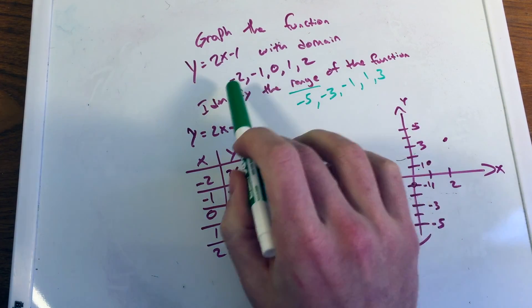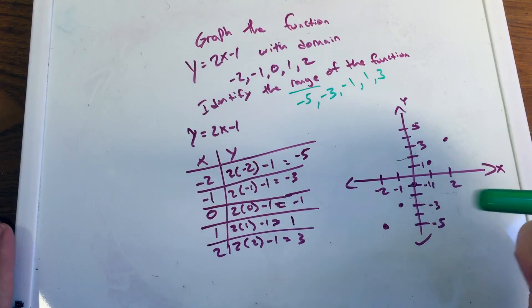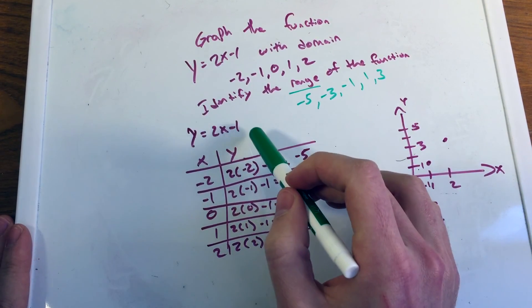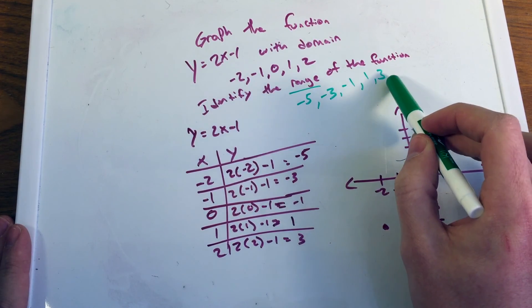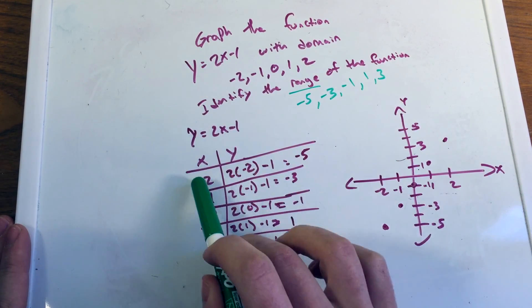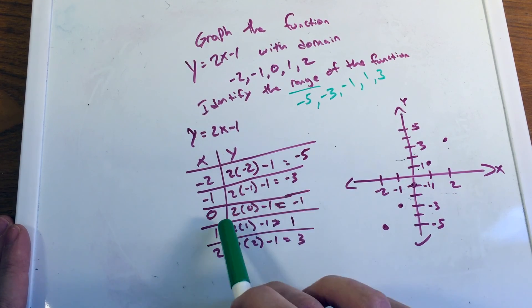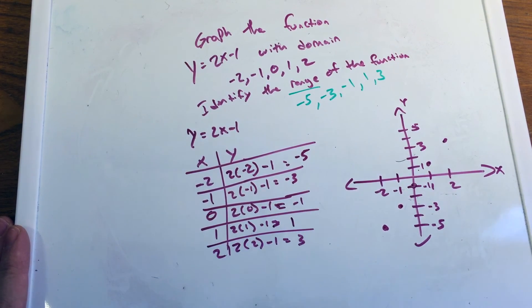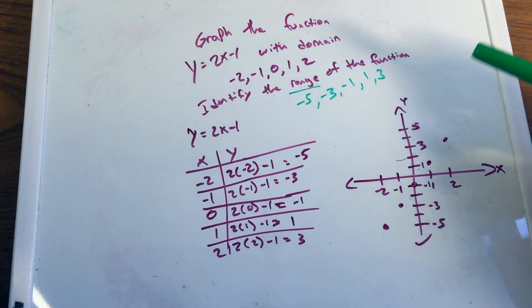So again, our domain, these numbers given here are negative 2, negative 1, 0, 1, 2. And we plug them in. We're inputting them into our function here to get our range, which was negative 5, negative 3, negative 1, 1, and 3. And they made up the coordinate points, negative 2 negative 5, negative 1 negative 3, 0 negative 1, 1, 1, 2, 3. And these are the coordinate points here that are the graph of the function with that specific domain.